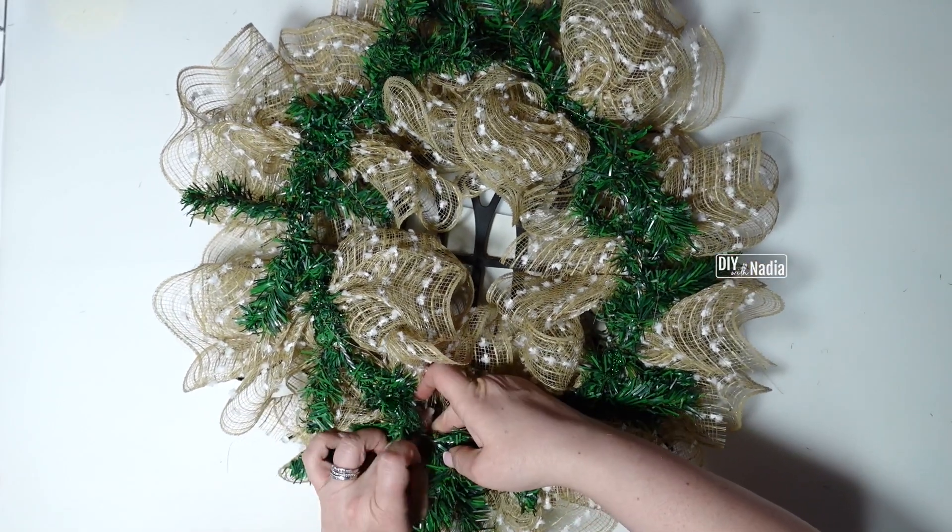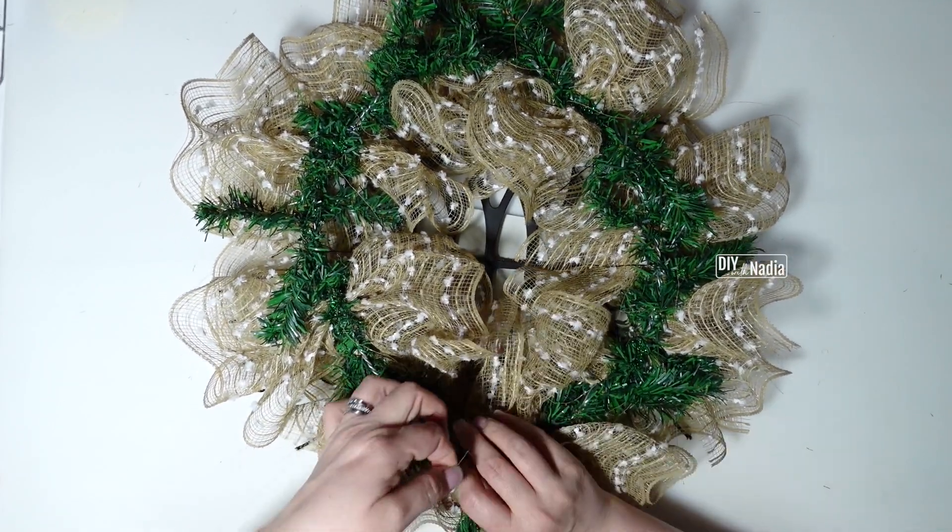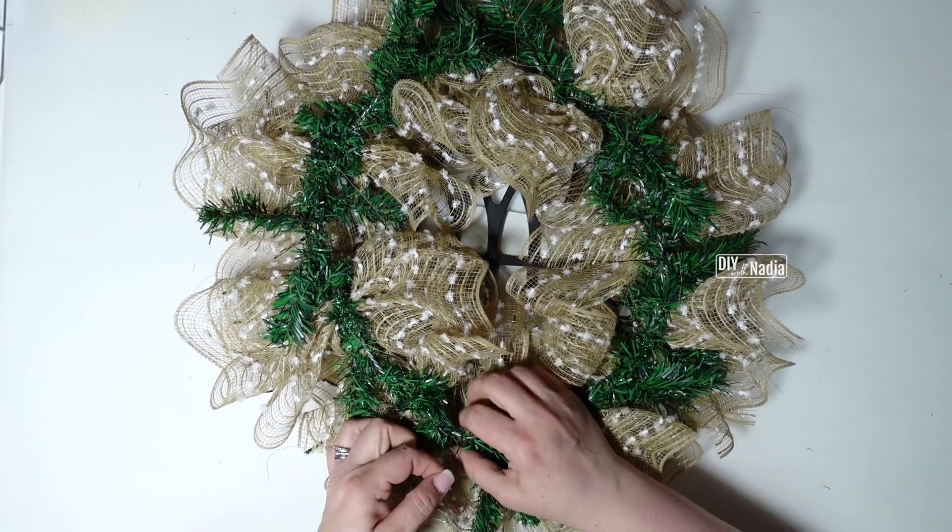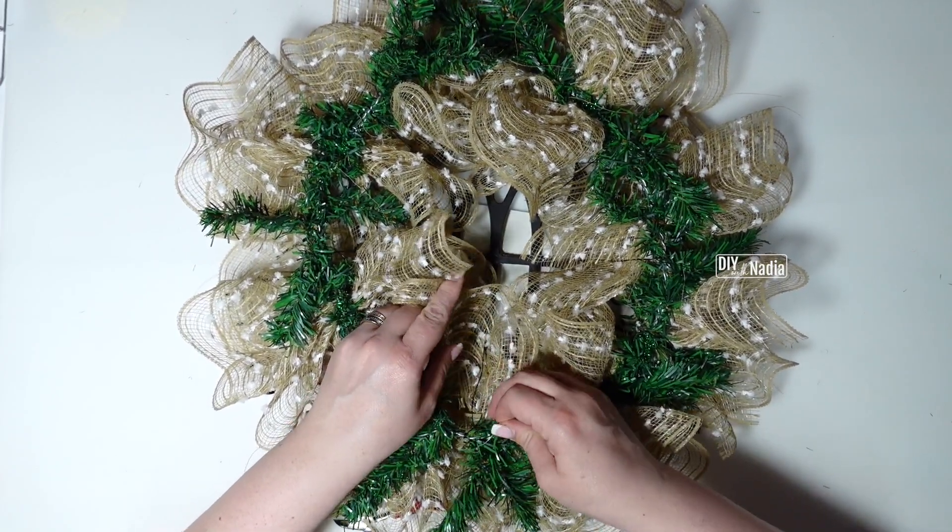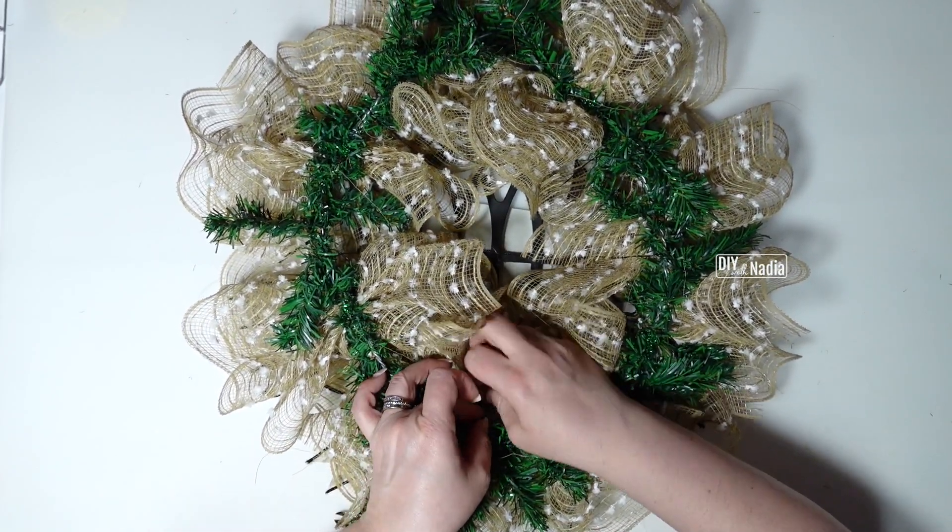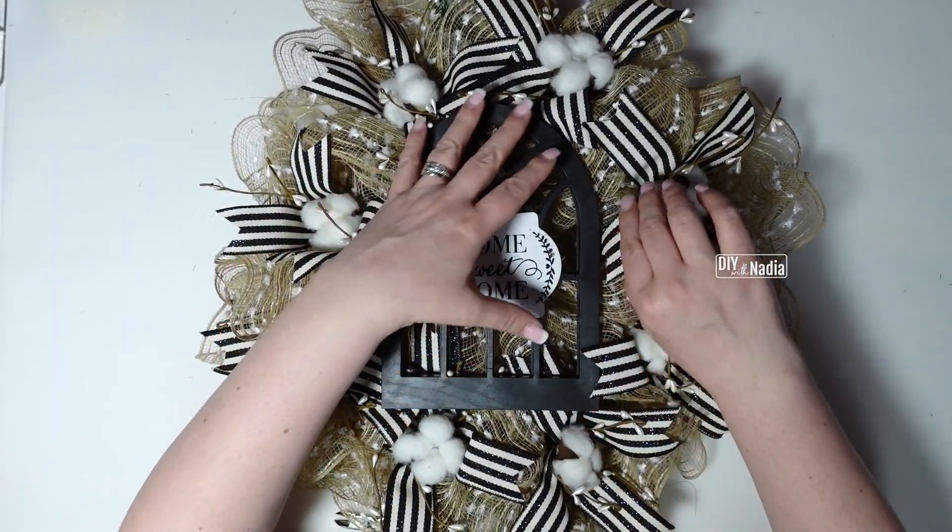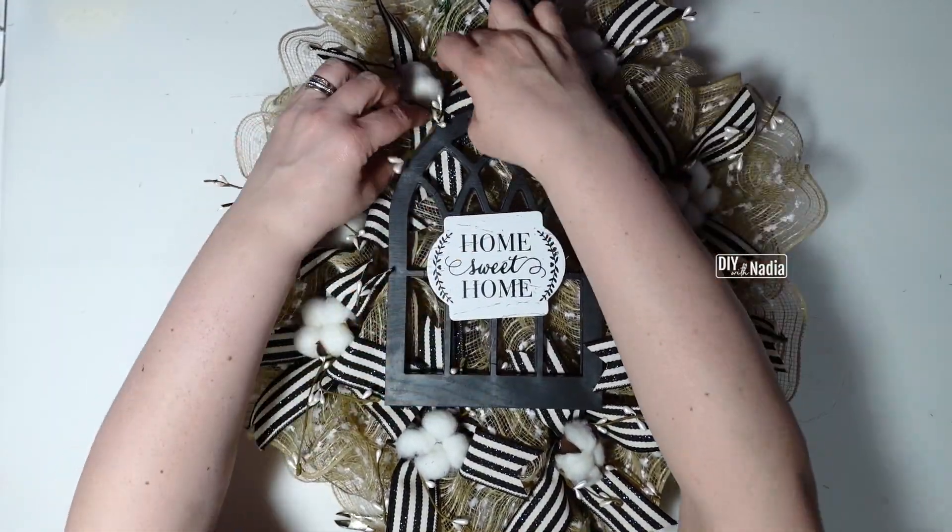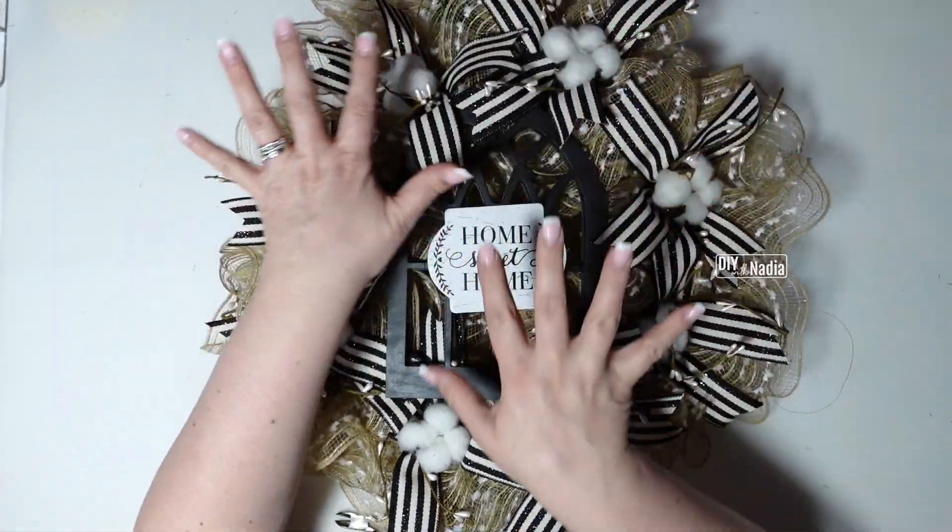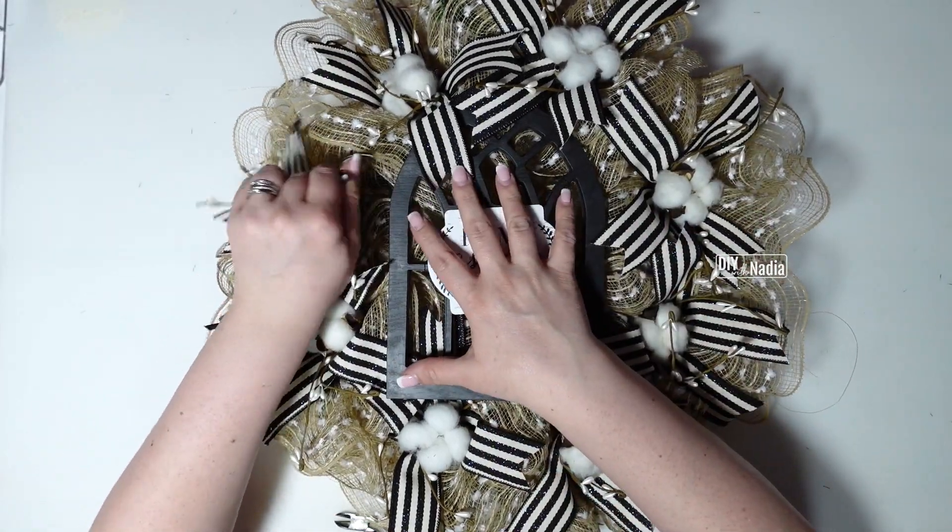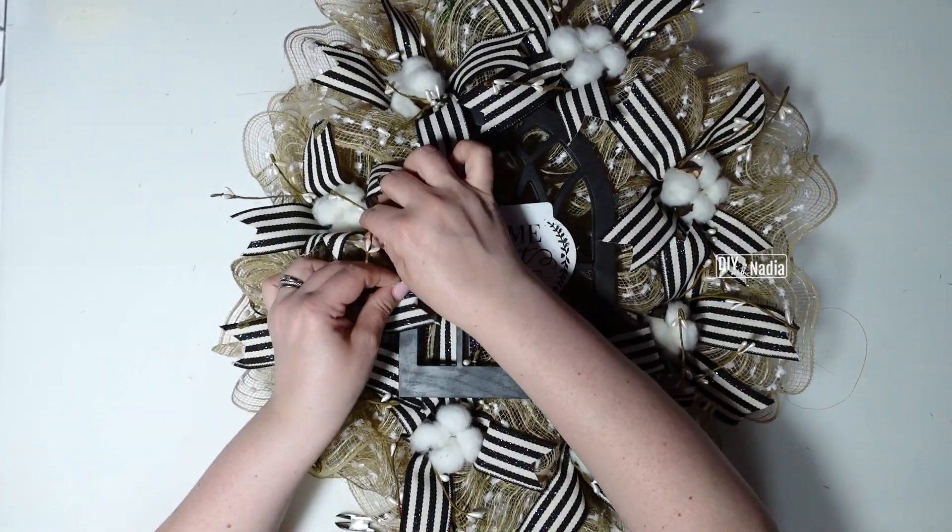And I'm just going to attach it right here to the bottom. I'm just doing a few twists around and then I'm just twisting it around the wire itself. After I have it in place I'm just going to pull up my ribbon right here just to kind of work it in and that's it our wreath is done.